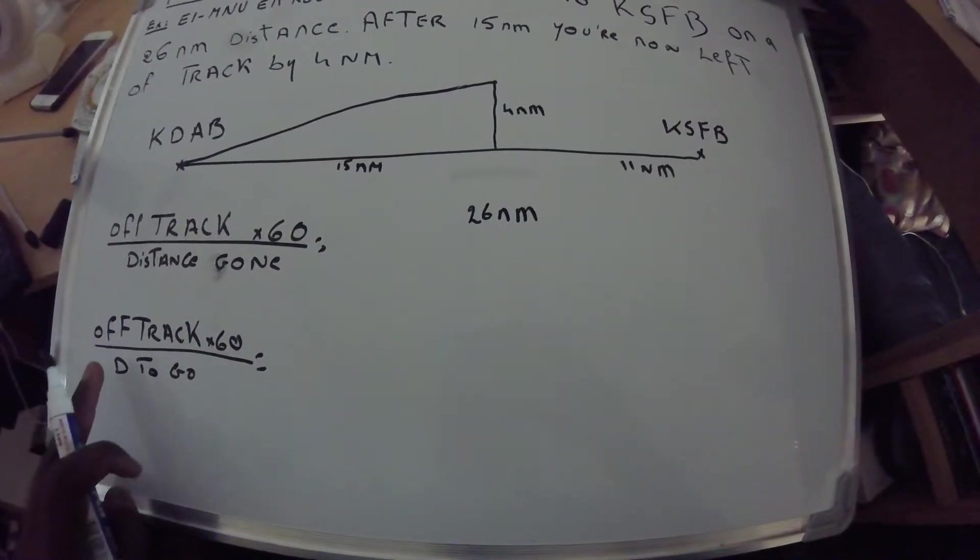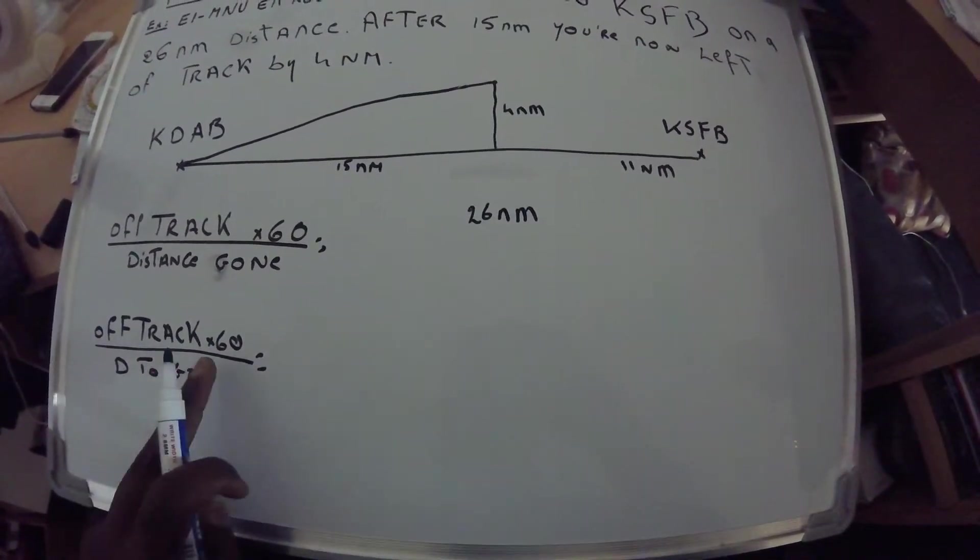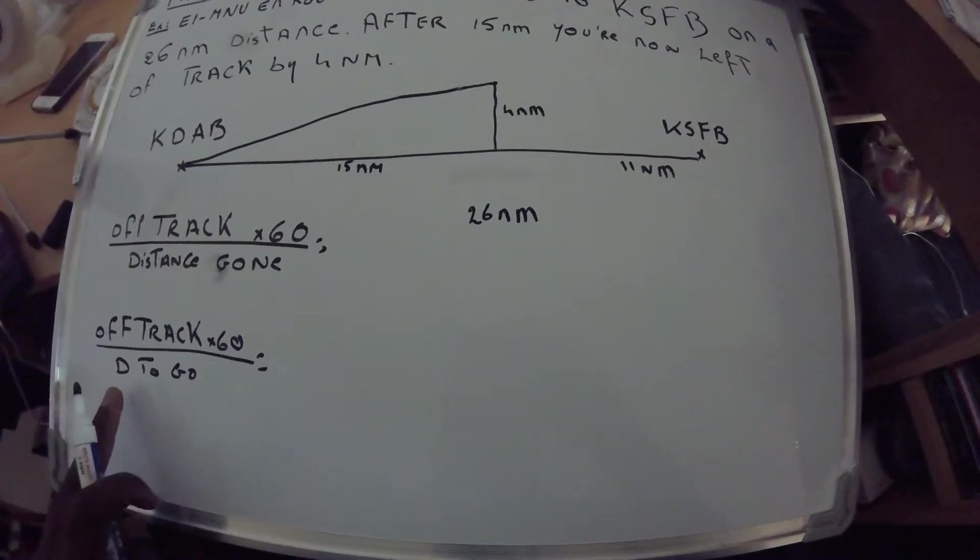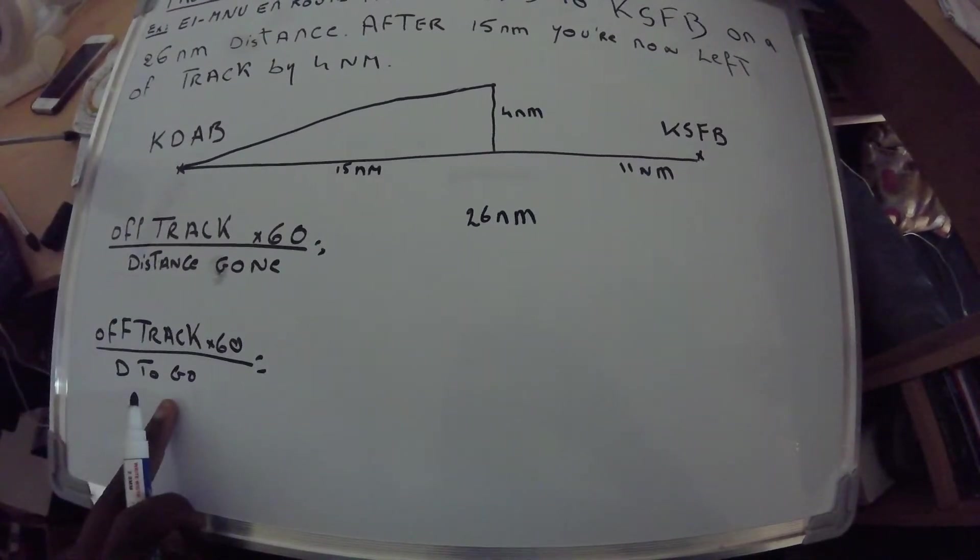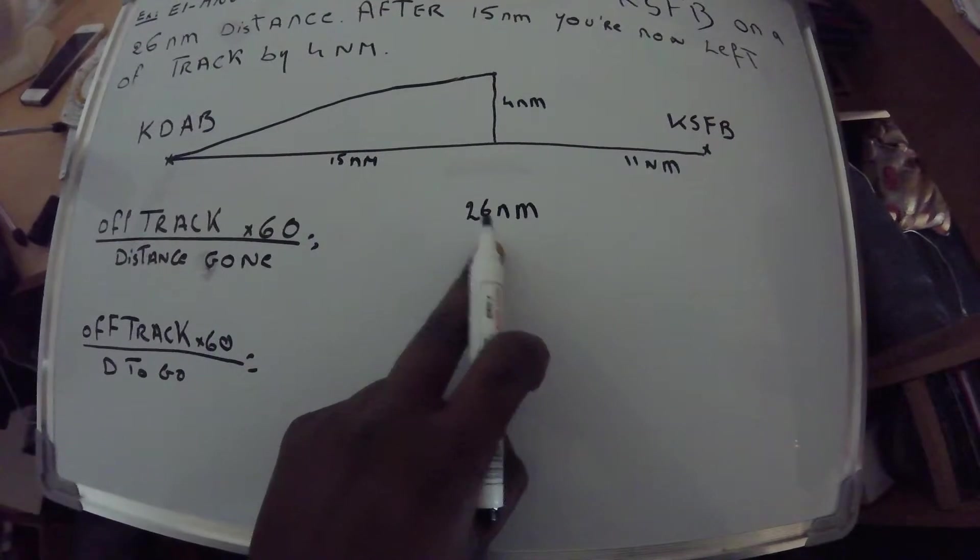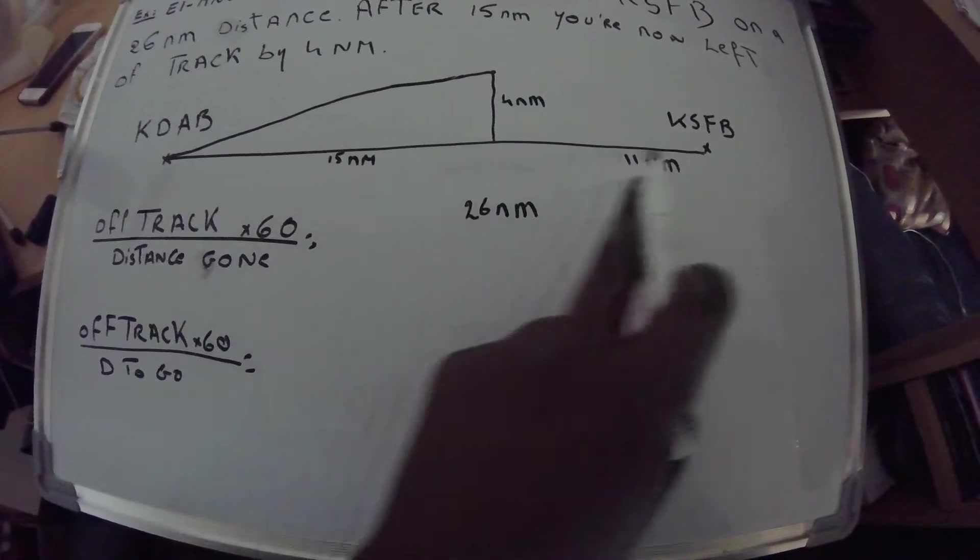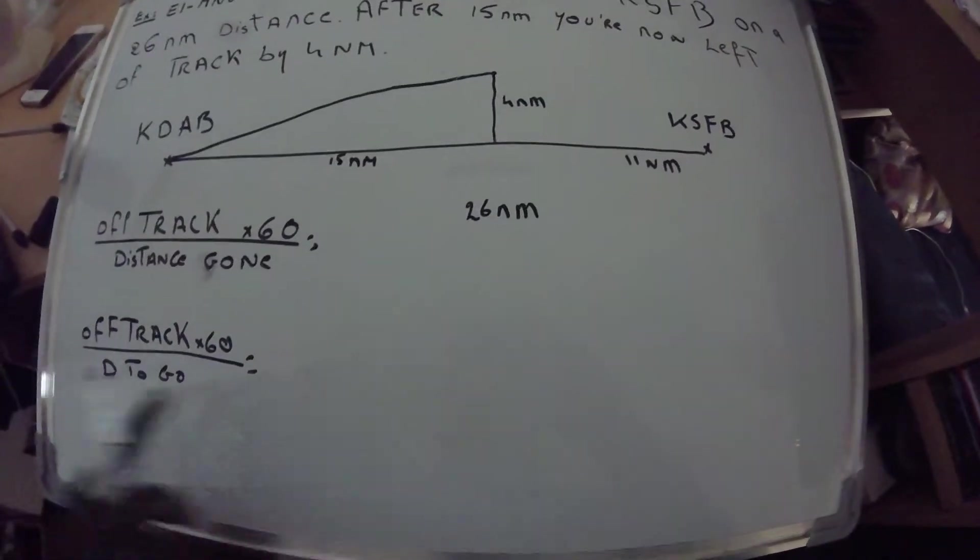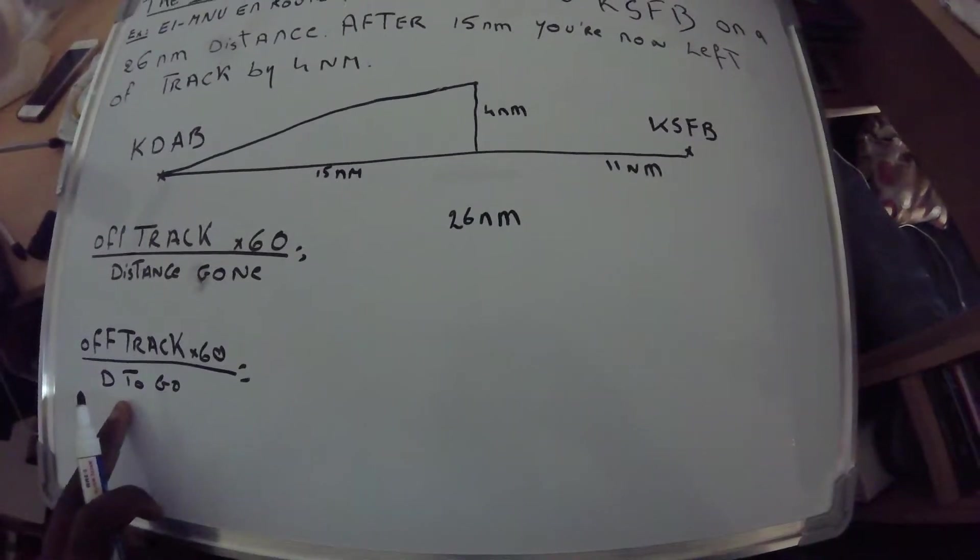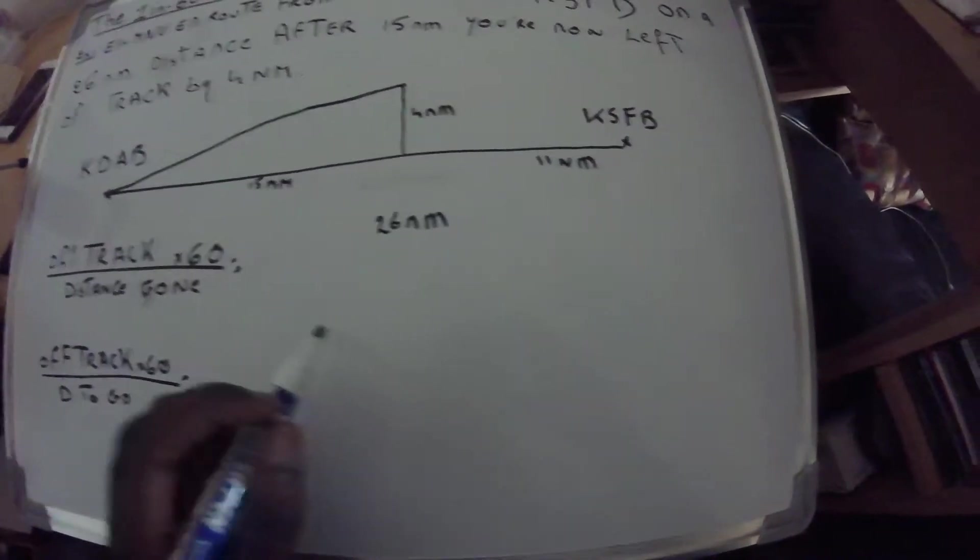Then we're gonna have off track again multiplied by 60 divided by distance to go. Distance to go is 26 minus 15, which equals 11 nautical miles. So distance to go now is 11 nautical miles.